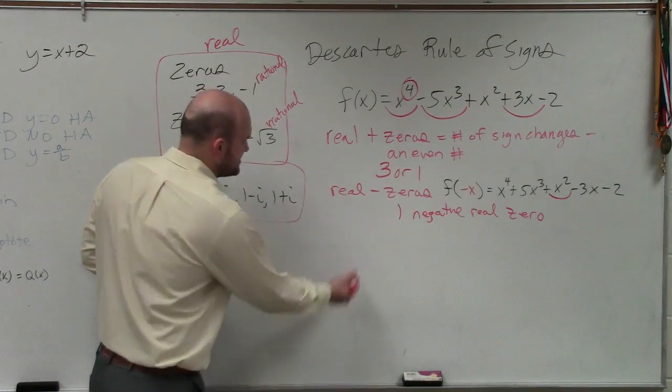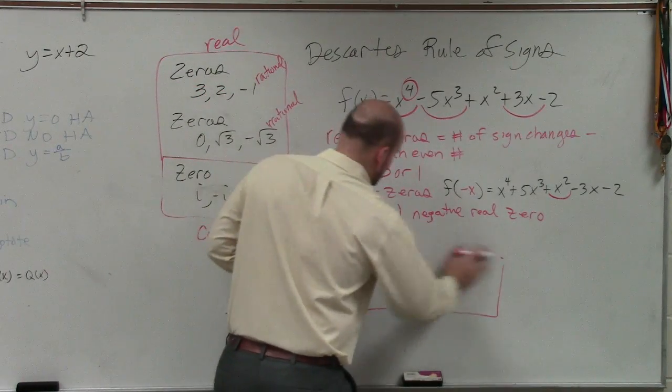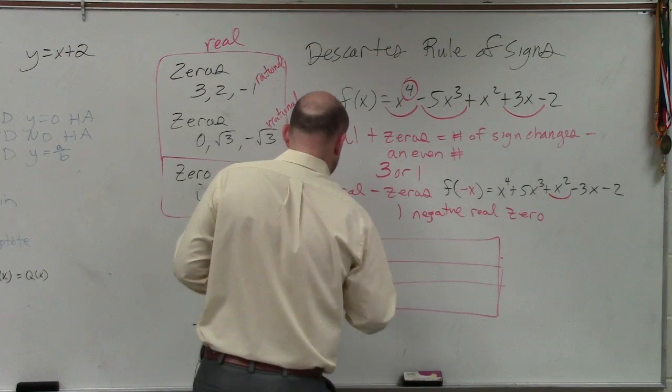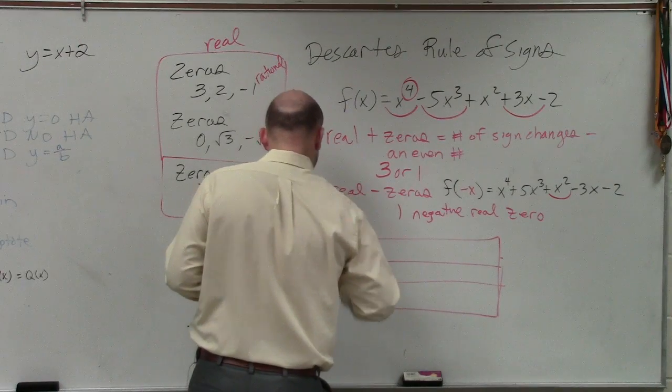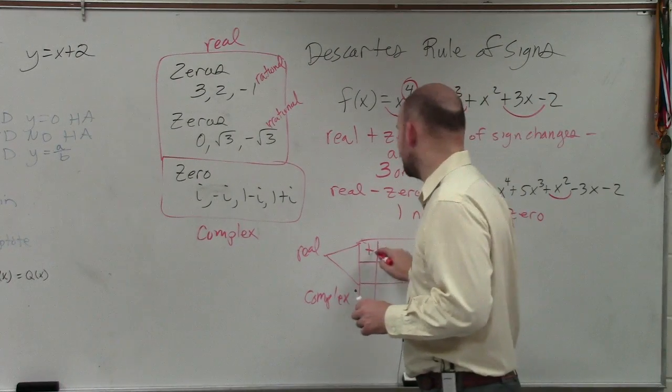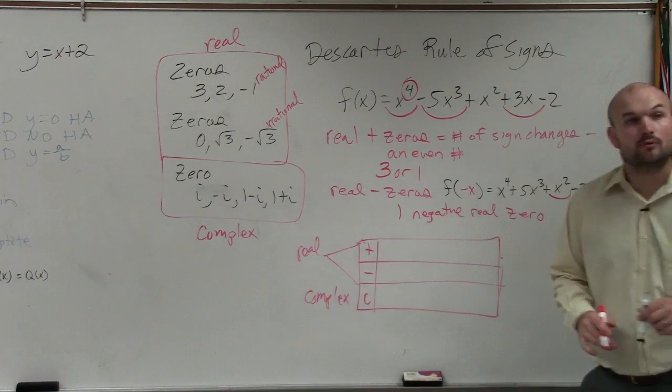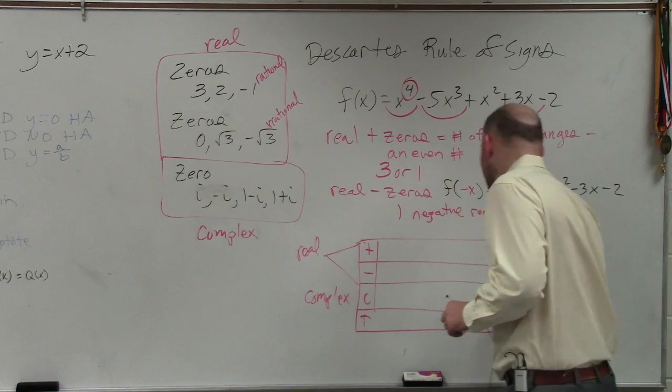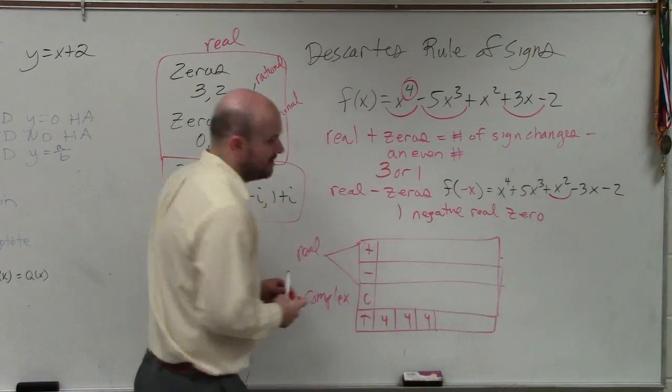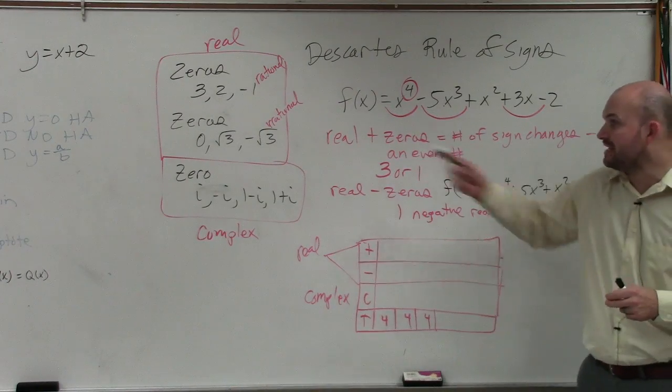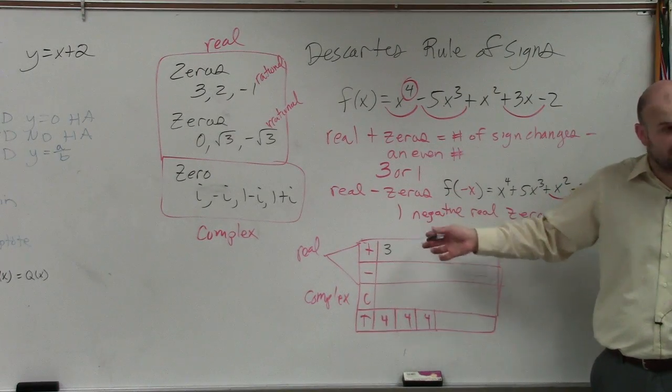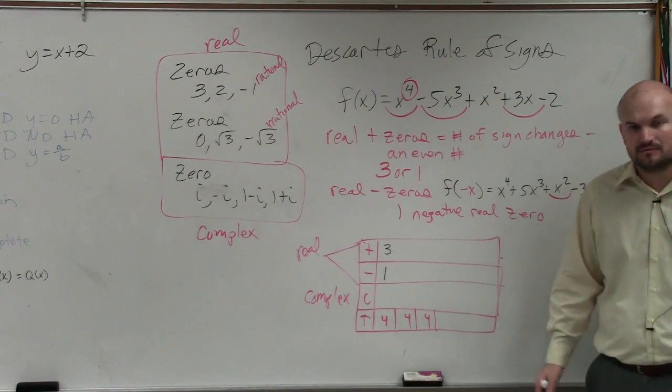So to understand this, I like to use a table. That's a bad table. So it always has to equal what? 4. Because the fundamental theorem of algebra, right? OK. So I said one possibility was there to have three real zeros. So if you have three real zeros, it says you have to have one negative zero, right? So we have to have one negative. Is it possible to have any complex then? No. So you have 0.